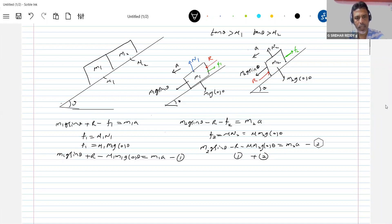This will be (m1 plus m2) g sin theta minus mu1 m1 plus mu2 m2 g cos theta equal to (m1 plus m2) into a.